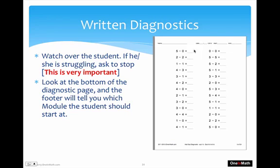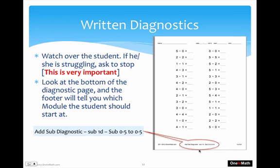Let's say your child stops at a page or is having trouble with some problems. You go down, look at the bottom of the packet, and there you'll see Add Sub Diagnostic, Sub 1D, Sub 0–5 of 0–5. This tells you the packet name and the module name — and that module name is where we're going to want your child to start. Once you figure that out, you can print out the first packet in that module, have your child complete it, and basically go from there.